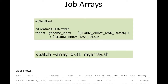You would submit such a script with sbatch --array equals a starting index ID and an ending index ID. Here it's going from 0 to 31, meaning there's a total of 32 array indices, and then the name of the batch script.